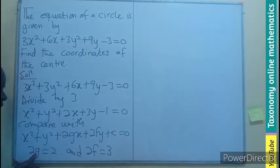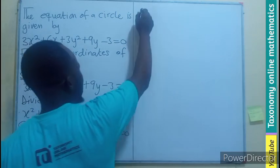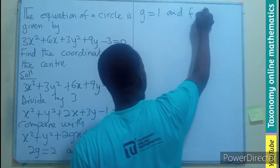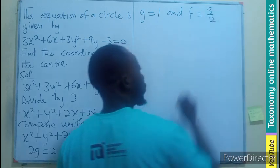And if we find the value of g here by dividing through by 2, the value of f here by dividing through by 2, we are going to have g = 1 and f = 3/2.